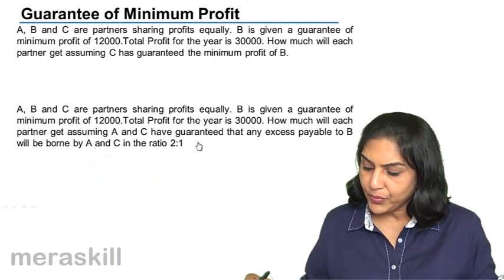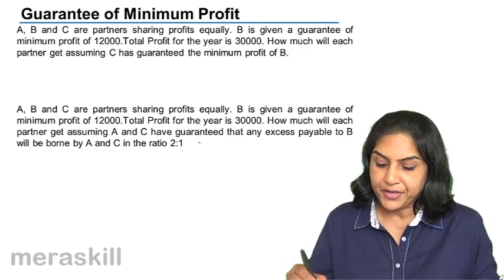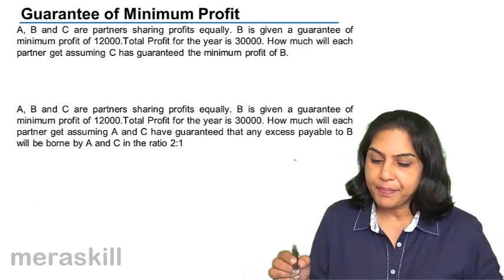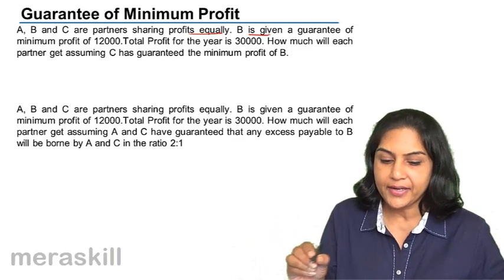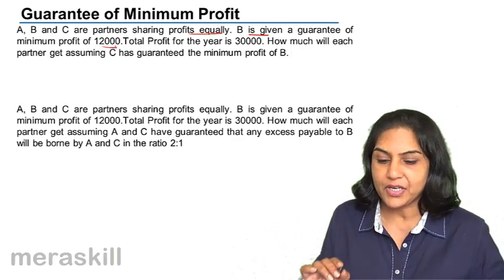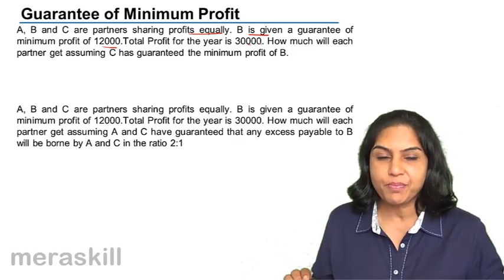Let us take another example where the terms of agreement for guarantee of profit is slightly different. A, B and C are partners sharing profits equally. B is given a guarantee of minimum profit of 12,000. Total profit for the year is 30,000. How much will each partner get?